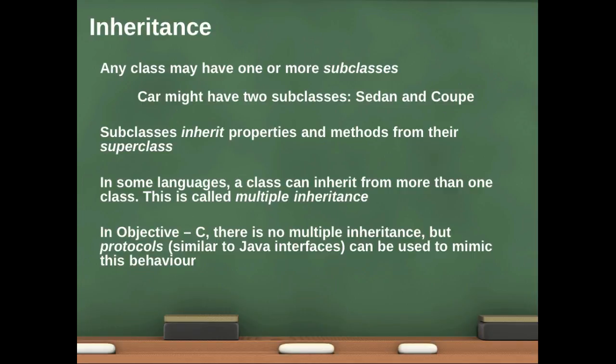In some languages, classes can inherit these properties and methods from more than one class. This is called multiple inheritance. In Objective-C there is no multiple inheritance. Multiple inheritance is allowed in languages like C++ and Eiffel, for example. But in Objective-C there is no direct multiple inheritance. But if you're familiar with Java programming, you know there's a concept called interfaces where we can declare properties and method headers. We have that in Objective-C. They're called protocols, and we'll talk about those in detail in Unit 3. But these protocols can be used to mimic a kind of multiple inheritance behavior, but it's not full multiple inheritance.